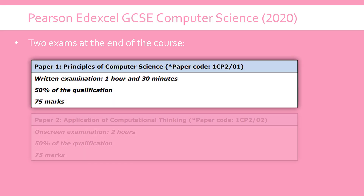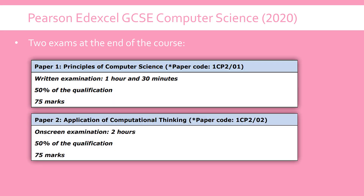As you quite possibly know, if you're studying this yourself and you're already down the line, there are two exams which make up this qualification. When you finish GCSE, you would have done two exams which are worth exactly the same — 50% of your grade — although the length of the exams do differ. Paper 2, which I'll have a separate video on, is quite different from Paper 1.